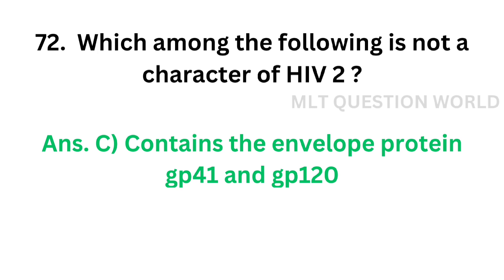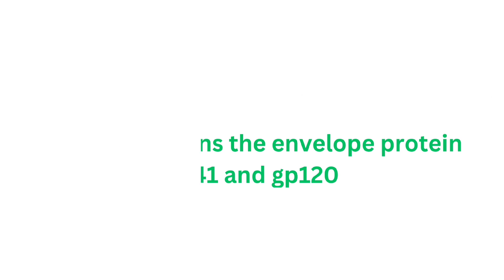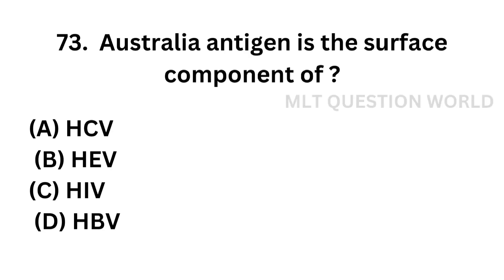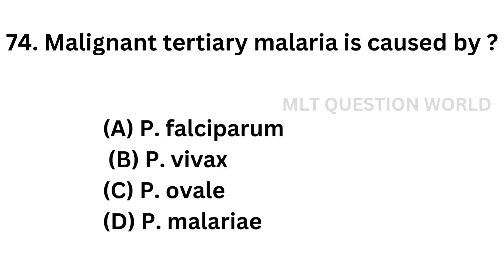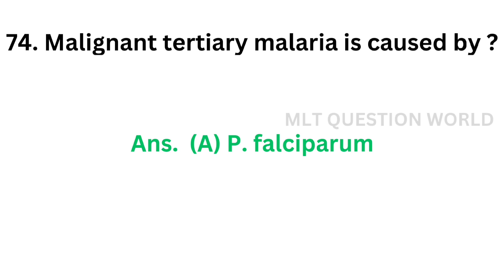Question 73. Australia antigen is the surface component of: Option A: Hepatitis C virus. Option B: Hepatitis E virus. Option C: HIV. Option D: HBV, that is Hepatitis B virus. The correct answer is Option D. Australia antigen is the surface component of Hepatitis B virus. Question 74. Malignant tertiary malaria is caused by: Option A: Plasmodium falciparum. The correct answer is Option A. Malignant tertiary malaria is caused by Plasmodium falciparum.